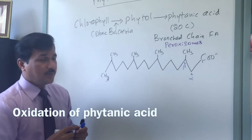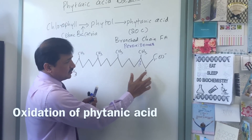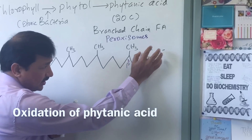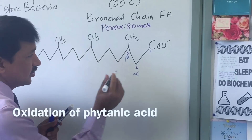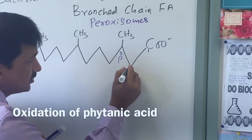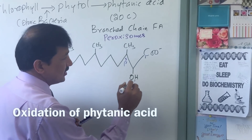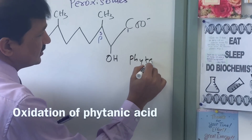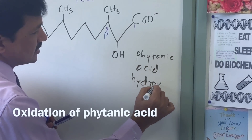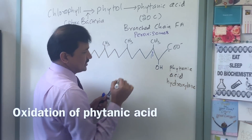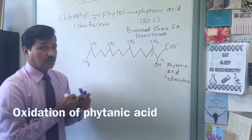In the alpha oxidation, the first carbon is the carboxyl carbon and the second carbon is the alpha carbon. In order to remove this one carbon, the alpha carbon is first converted — basically it is oxidized into a hydroxyl group. This is done by an enzyme called phytanic acid hydroxylase, which adds a hydroxyl group to the alpha carbon.